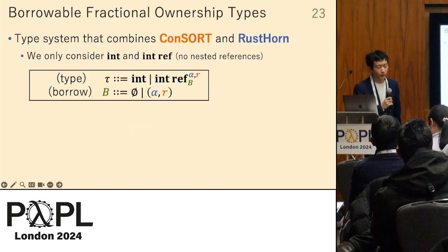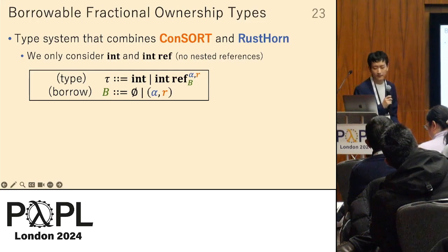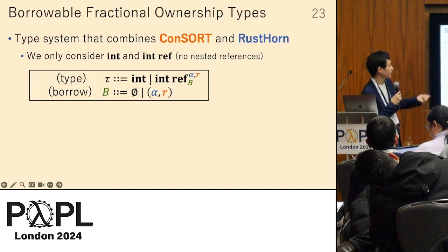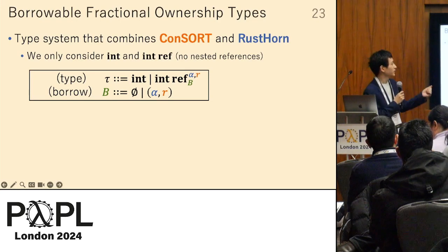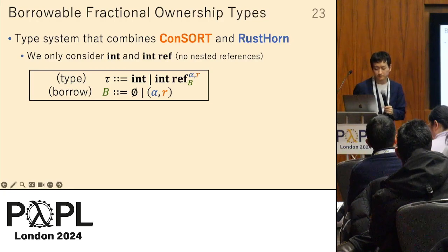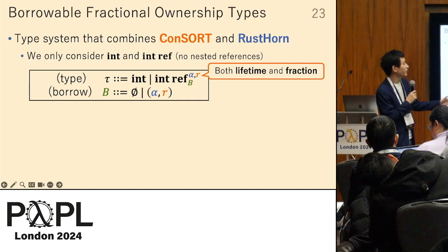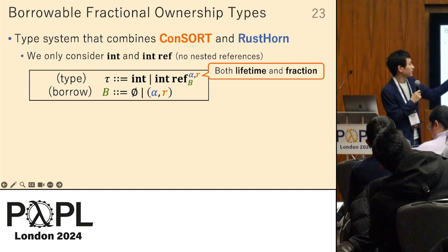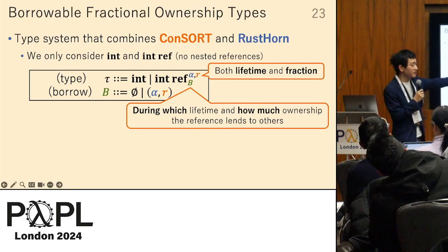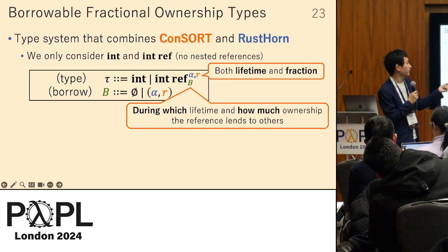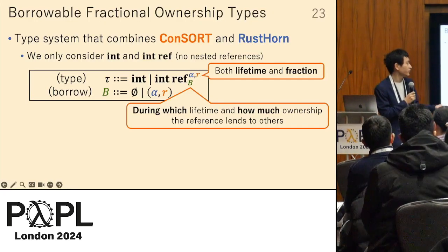We propose borrowable fractional ownership types — a type system that combines Consort and RustHorn. We consider only integers and references to integers, not nested references. The reference type has both a lifetime and fractional ownership on the upper part of its type, and also has borrowing information B on its lower part, consisting of a lifetime and fraction indicating during which lifetime and how much ownership the reference lends to others.